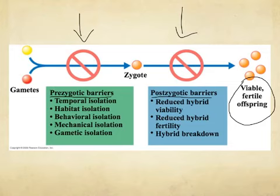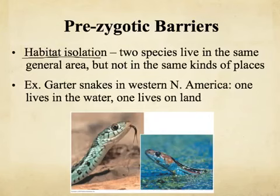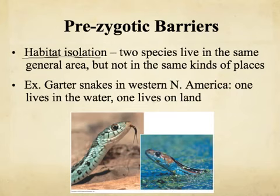The first prezygotic barrier is habitat isolation. Two species live in the same general area but not in the same kinds of places, so they never mate and never have fertile offspring — therefore they're considered two different species. For example, there are garter snakes in western North America, but one lives in the water and one lives on land. Because they have different habitat preferences, they don't mate and are considered different species. It was natural selection that led to the preferences of these two species.